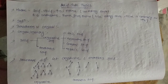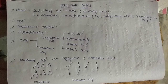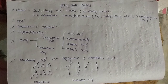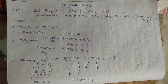Covalent or network solids are the solids consisting of atoms of the same or different elements connected to each other by covalent bonds. The constituent atoms are held together by covalent bonds. Examples include diamond, graphite, and silicon. These solids are very hard and brittle and have very high melting and boiling points.